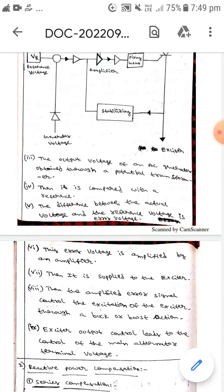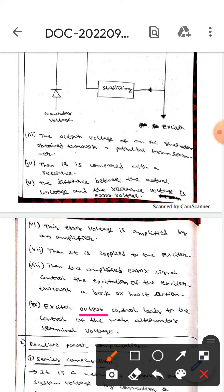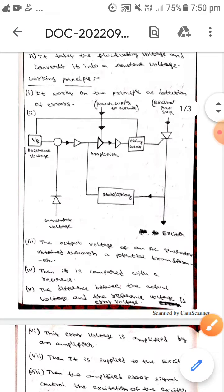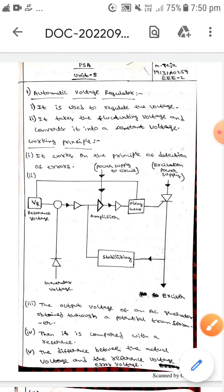Then it is supplied to the exciter. The amplified error signal controls the excitation of the exciter through a buck-boost action. This excitation output control leads to the control of the main alternator terminal voltage. This is all about the automatic voltage regulator. I hope you understand. Thank you.